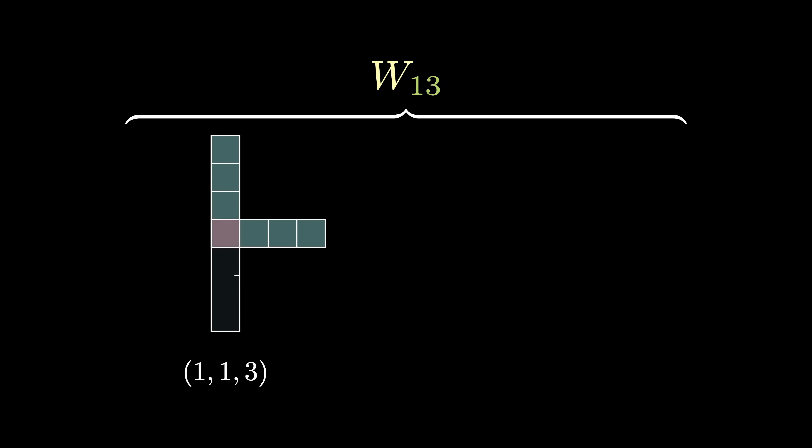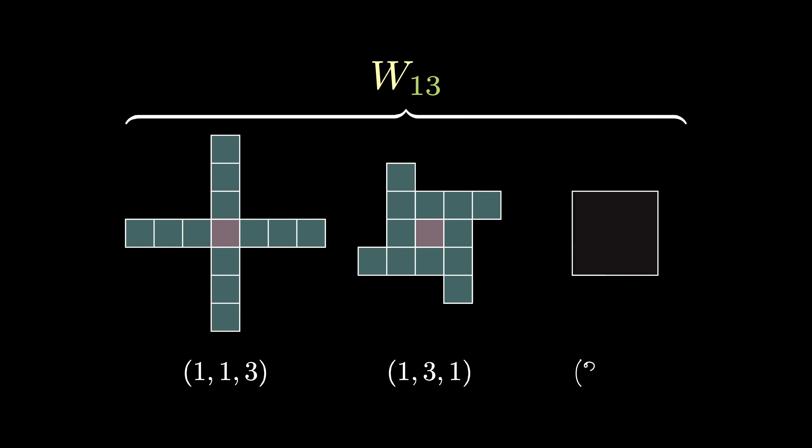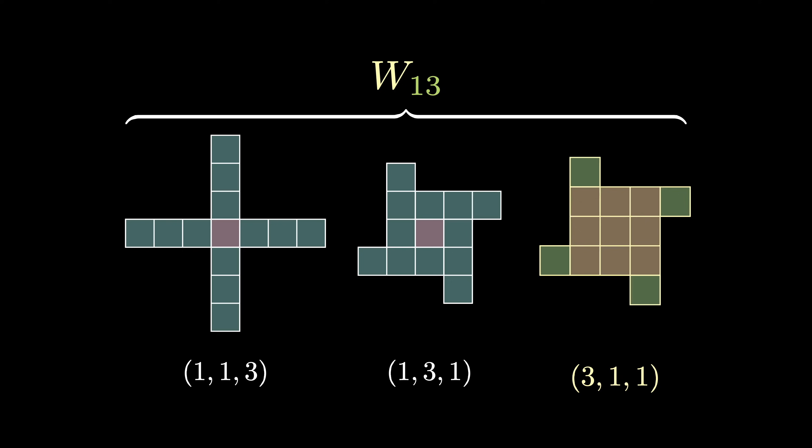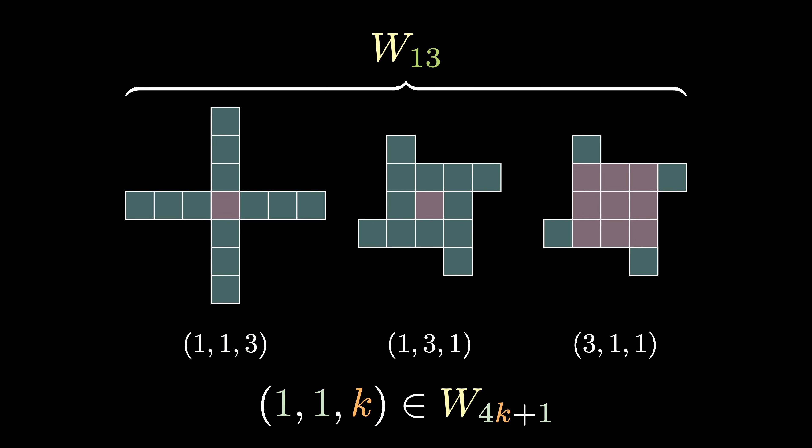Let's consider the set of all windmills for a given prime number p of the form 4k+1, say 13. 13 has three windmills: (1,1,3), (1,3,1), and (3,1,1). As a sanity check, notice that there does exist a windmill with y = z, namely (3,1,1), and this tells us that 13 = 3² + 2². One thing I want you to see is that for a given prime p of the form 4k+1, there exists at least one windmill. It happens to be (1,1,k). So with 13, this windmill is (1,1,3). You can see that it forms a windmill by plugging it in: 1² + 4k = 4k + 1 = p.